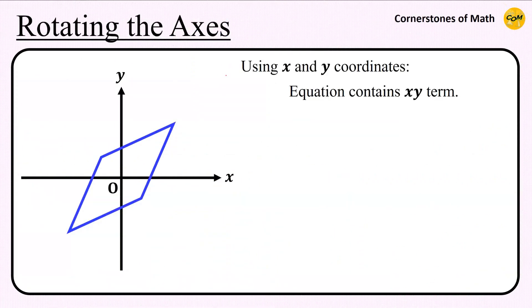Here's the strategy. Suppose that we have some kind of rotated conic section on xy plane, and the equation of the graph contains xy term. Actually, this diamond graph is not really a conic section, but I used it anyway because we don't know the exact type of the conic section yet.